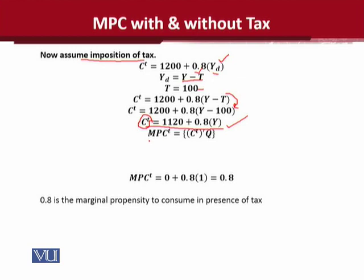Now, MPC after the imposition of tax will be the derivative of this consumption function. When we have the consumption function with disposable income and calculate the derivative with respect to Y, we will get the answer which will be 0.8. That will be the MPC when tax is imposed. This is how MPC can be calculated by using the derivative of the consumption function, even in the presence of tax.